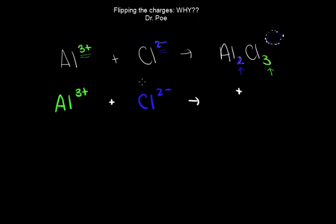So we have to figure out a number of these and a number of those in order to get the charge equal to zero. Let's add in one more of each. Al³⁺ and Cl²⁻. Right now we've got 6 positives and we've got 4 negatives. So our overall charge is going to be positive 2 right now.